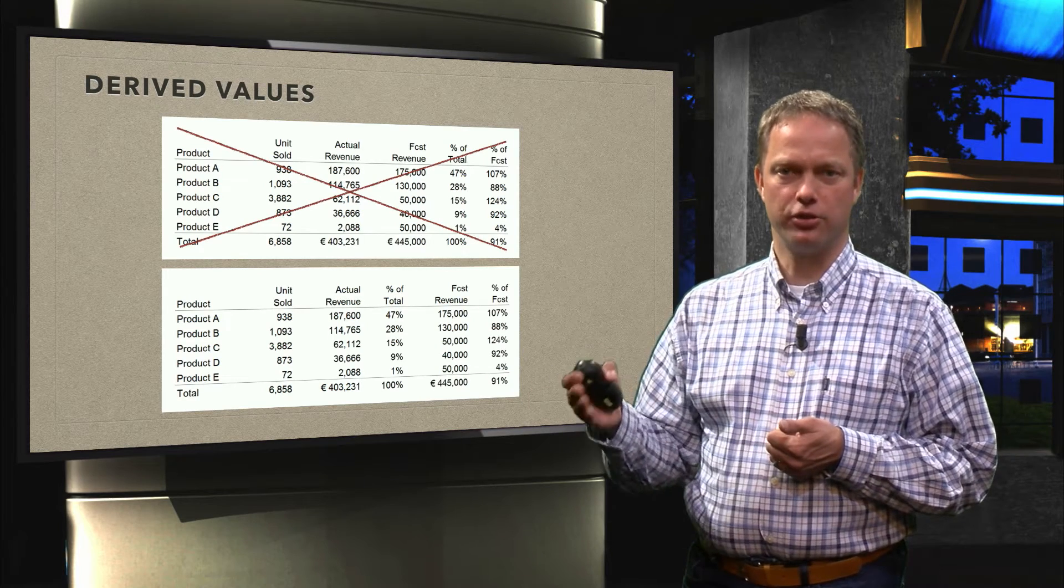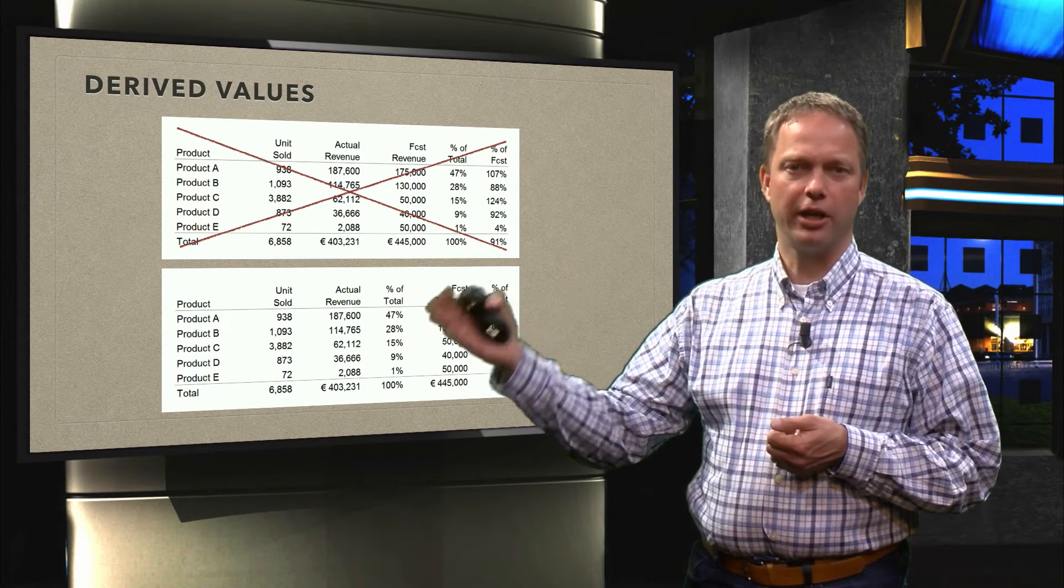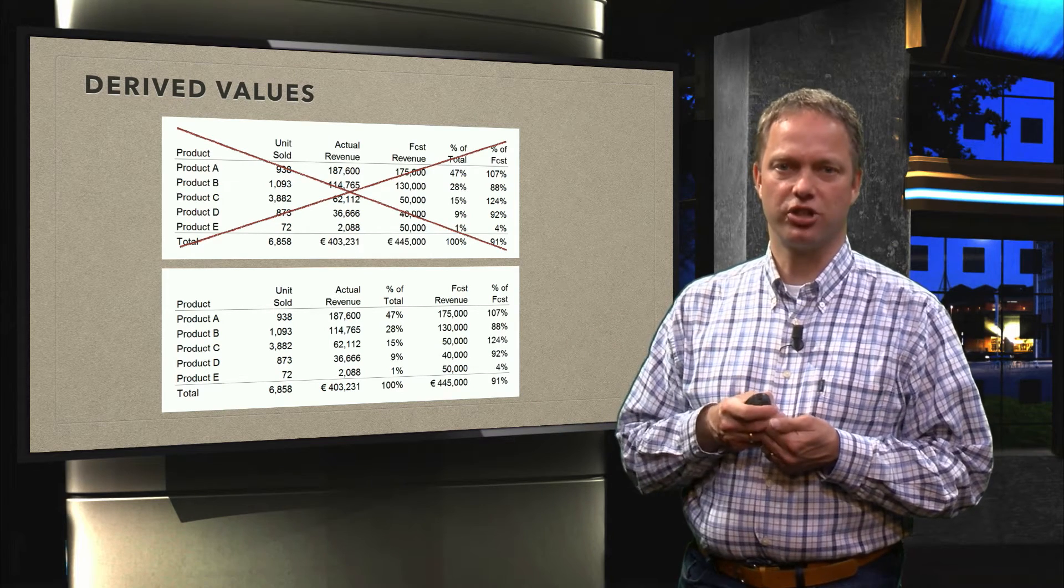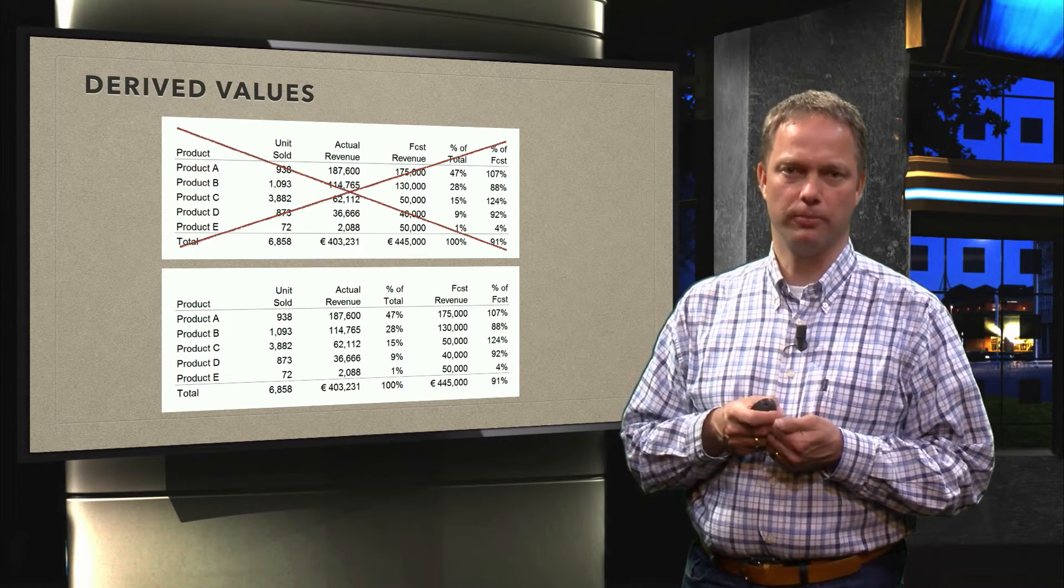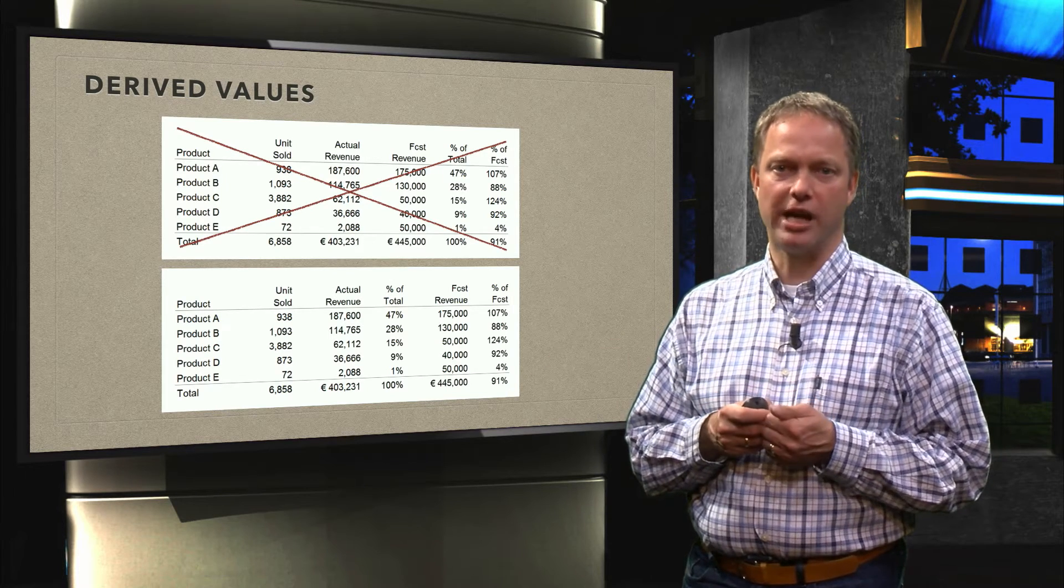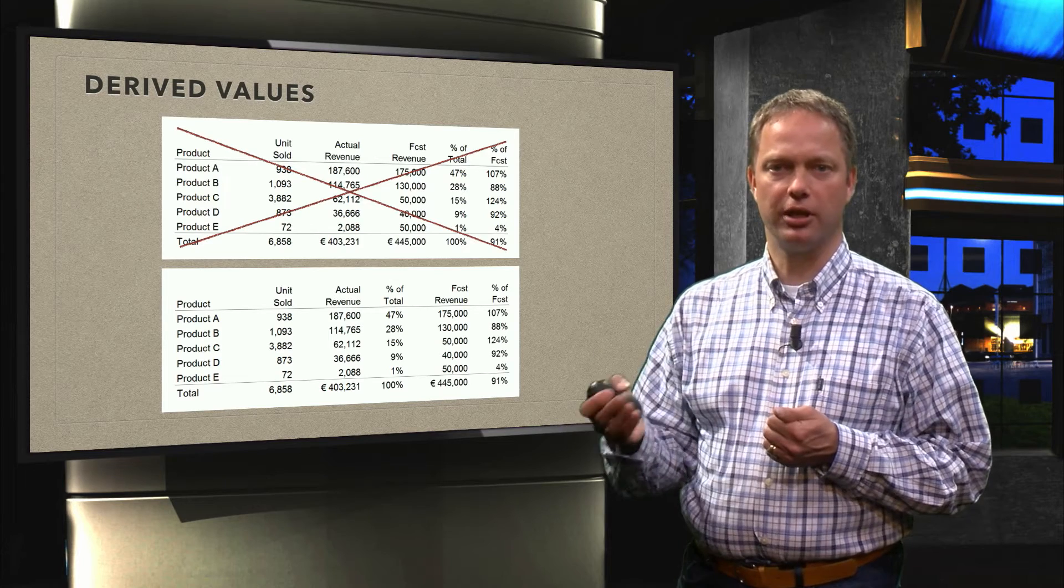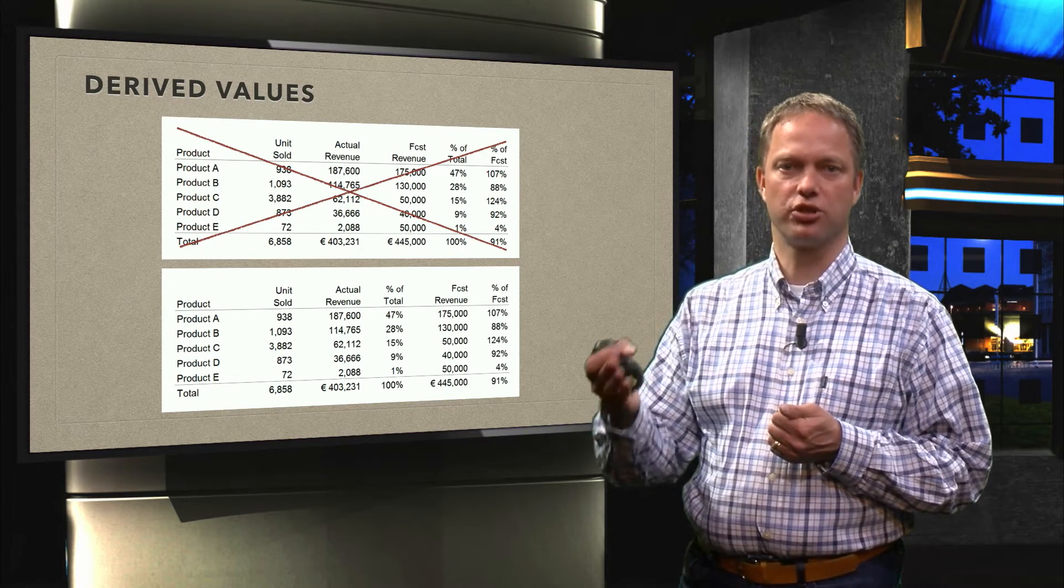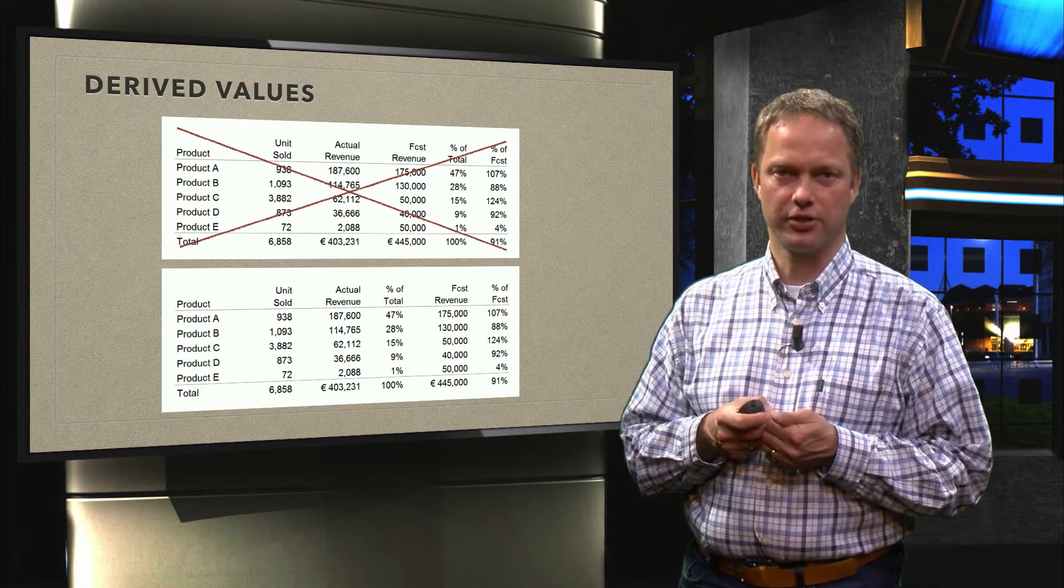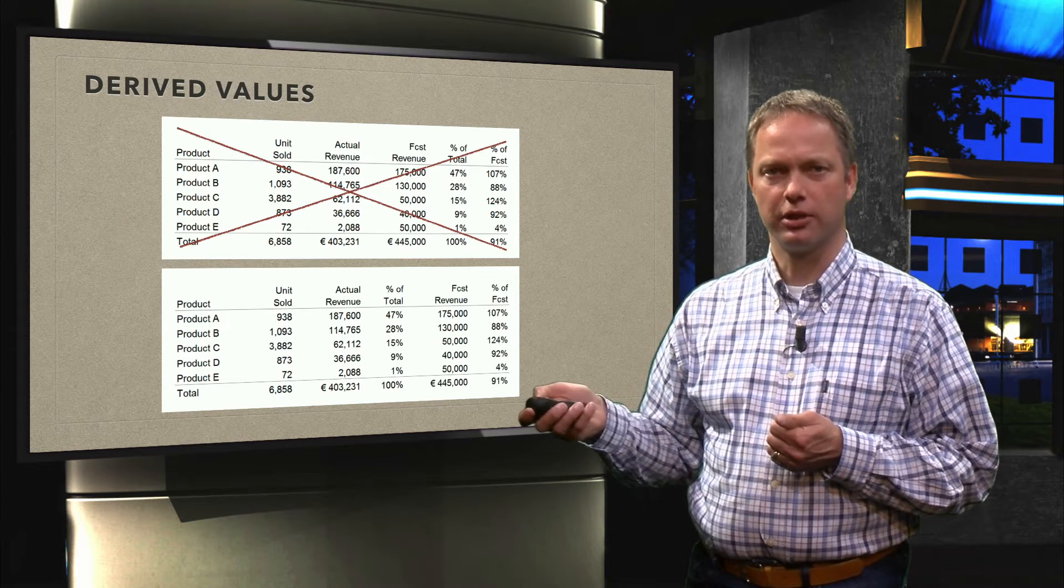If you have derived values, if you have values that are calculated based on other columns, we should move these calculations as close to the other columns as possible. And now you see we have moved the percentage of total and put it next to the actual revenue. And now it is very clear that the percentage of total is a percentage of the actual revenue. And the same is true for the forecast. So that is about derived values.